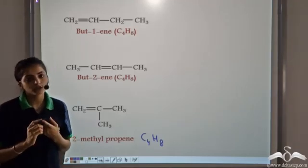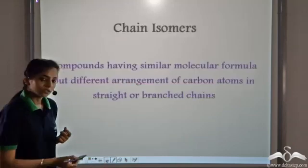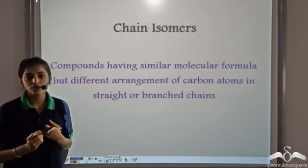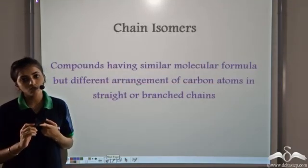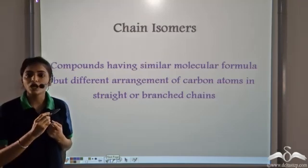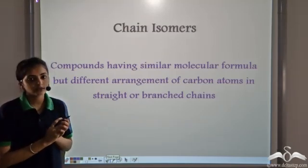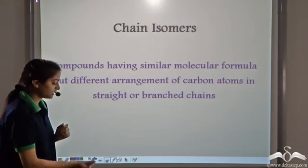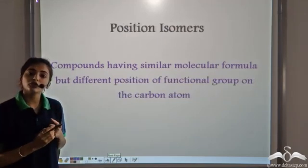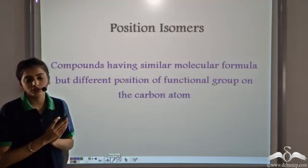Let's recall the two types of isomers. The first type is chain isomers — compounds having the same molecular formula but different arrangements of carbon atoms in straight or branched chains. The second type is position isomers — compounds that differ in the position of the functional group present in the structure.